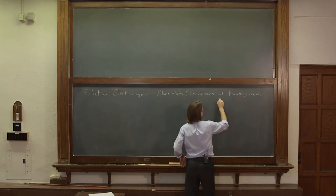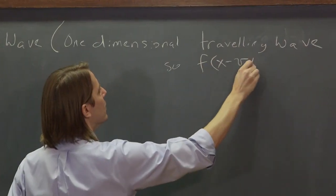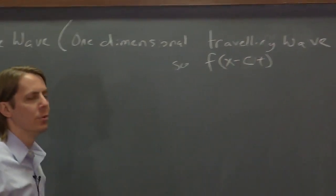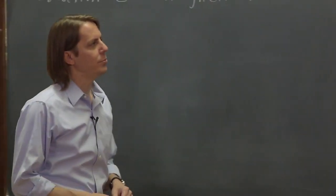And what we mean by that in words is simply a one-dimensional traveling wave. And just like the string, that means it's a function of x minus vt, or in this case x minus ct, because we know that all light waves go at the speed of light.